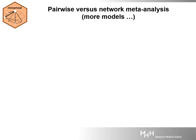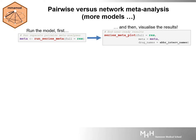We can explore the implications of assuming consistency and a common heterogeneity, as opposed to performing pairwise meta-analysis separately for each observed comparison in the network. First, use the RunModel function to conduct separate pairwise meta-analysis for all observed comparisons. Next, insert the result into the series_meta_plot function to experience the visualization toolkit for this analysis. This function returns the same results in two formats: a table printed on the console and a panel of forest plots.